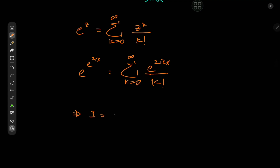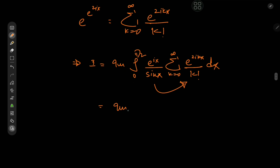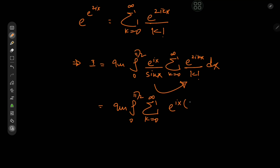This implies that the target integral I is the imaginary part of the integral from 0 to π/2 of e to the ix divided by sine x, times the sum over k of e^(2ikx) divided by k factorial, dx. Both e^(ix) and 1/sin(x) are independent of the index k, so we take them inside the summation. We combine the exponentials: e^(ix) · e^(2ikx) = e^(ix(1+2k)), giving us e to the i times (1+2k)x in the integrand.